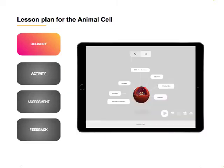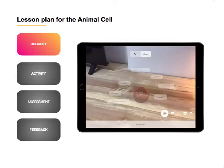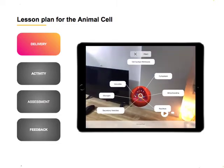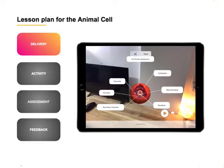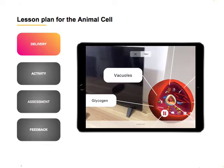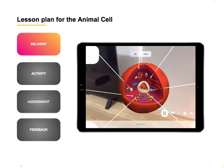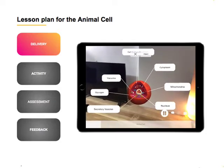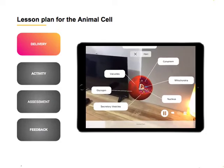Now once the animal cell experience has been projected onto the TV or even a projector, what you can do is start highlighting all the different parts of it by moving around the 3D model and zooming in and out, and then in parallel providing all the necessary information that you normally would. As you can observe, this is far more superior than just sketches of the animal cell on the whiteboard, or even images of the animal cell in the textbook.